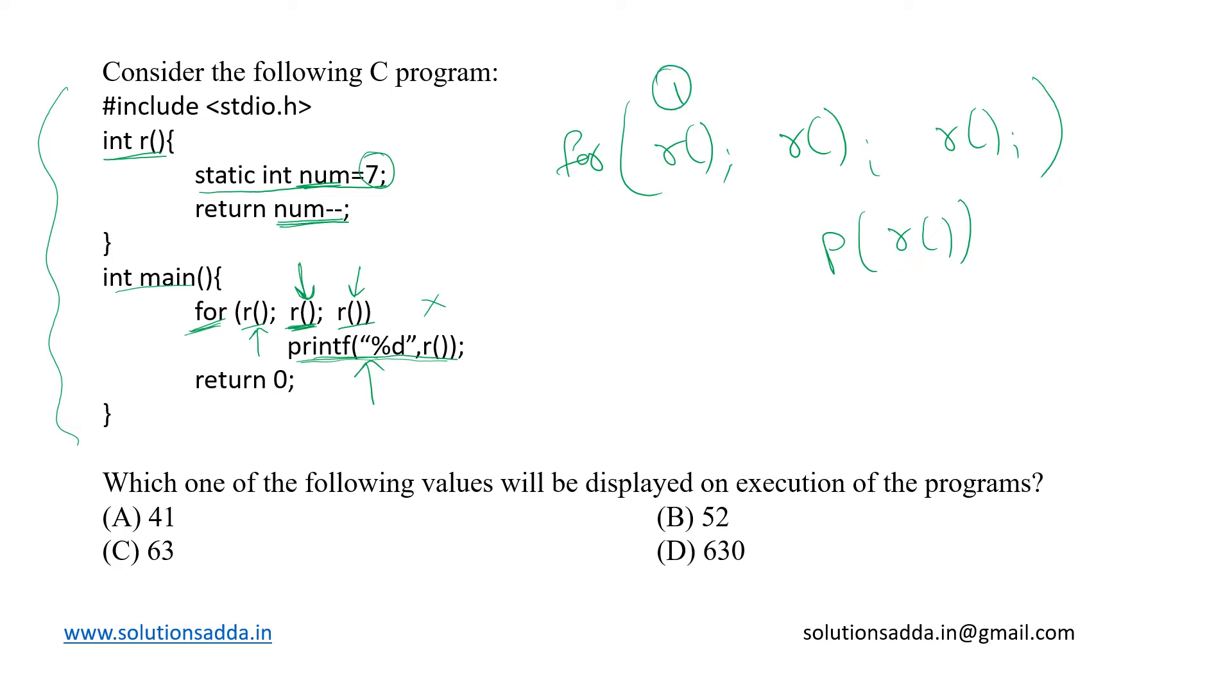Now in step 1 over here when this first function call is performed the value returned will be 7. It is returning the same value and after returning it is doing this post decrement. So in the next iteration it will be treated as 6 and since it is a static variable it will not be initialized again and again.